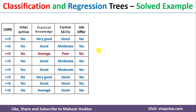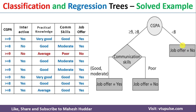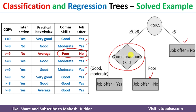Since Communication Skill has the maximum Gini among the remaining attributes, it is selected as the next splitting node. Communication Skill has three possibilities: Good, Moderate, and Poor. Whenever Communication Skill is Poor, the job offer is No. For Good and Moderate, the job offer is Yes in every case. This is how we apply the CART algorithm to build the decision tree.